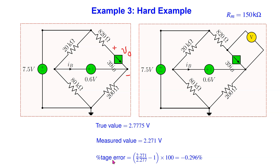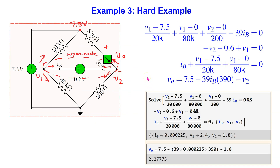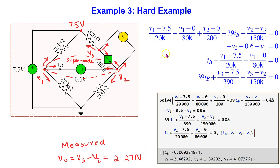In this problem the percentage error comes out as approximately less than minus 0.5 percent. Please pause the video now and do the circuit analysis for the two circuits to verify the values shown. For completeness, the node voltage circuit analysis equations and Mathematica solution for the true value are shown. Note that in this case a supernode is involved in the solution. Similarly, we can treat the voltmeter as a 150 kilohm resistor connected into the circuit and use the node voltage method to find the measured voltage V0.